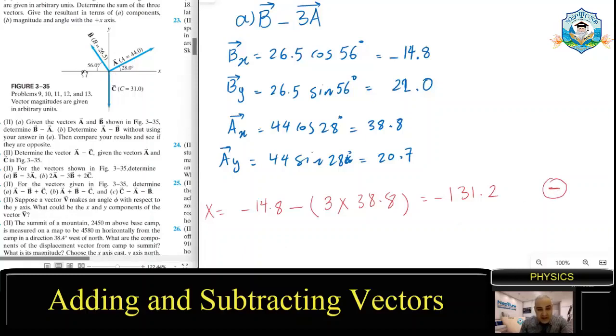Now depending on Y, we end up in quadrant two or three. So what about Y? Y is B again - start with B, 22 - minus three A, which is 20.7. This is also negative: -40.1. That's also negative.